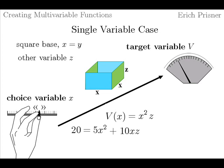We have three variables, but only two equations. This differs from algebra word problems where usually the number of equations equals the number of variables. But for calculus, having fewer equations is typical. Since we want to express target variable only in terms of choice variable, we have to get rid of the other variable. In our example, we solve the second equation for Z and get Z equals (20 minus 5X squared) over 10X, which is equal to (4 minus X squared) over 2X.